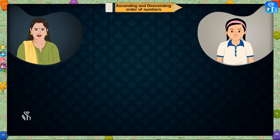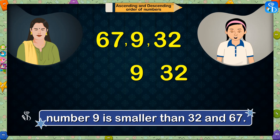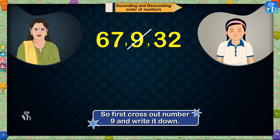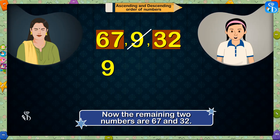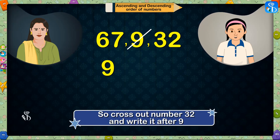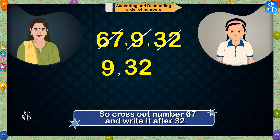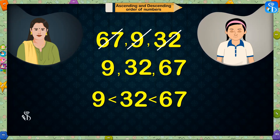Now, you solve the second question. The numbers are 67, 9, and 32. Student: In 67, 9, and 32, number 9 is smaller than 32 and 67 also. So, first cross it out and write it down. Now, the remaining two numbers are 67 and 32. Of these two numbers, 32 is the smaller number. So, cross it out and write it after 9. The third number left is 67. So, cross it out and write it after 32. Teacher: That's right. So, this is the ascending order of these numbers.